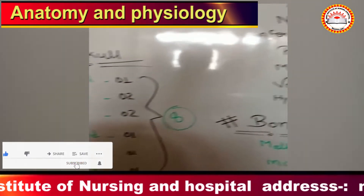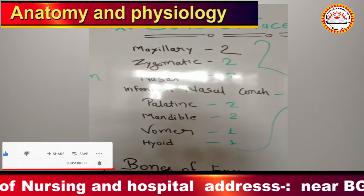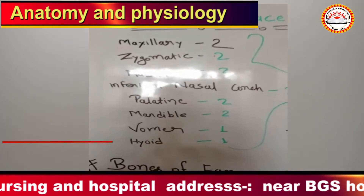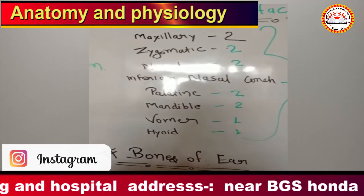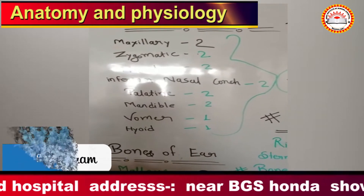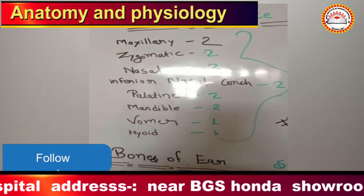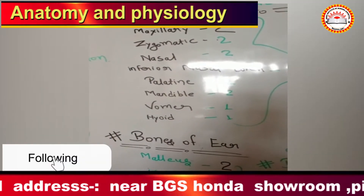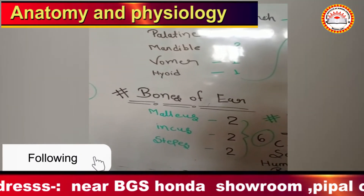Then you can see bones of the face: maxillary 2, zygomatic 2, nasal 2, inferior nasal concha 2, palatine 2, mandible 2, vomer 1, hyoid 1.